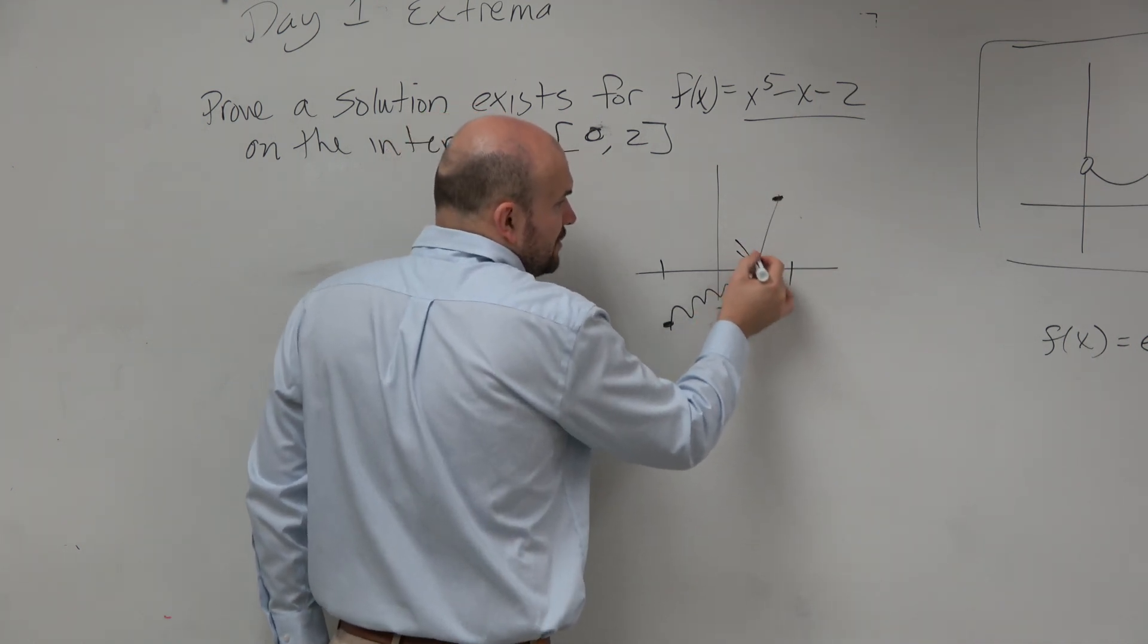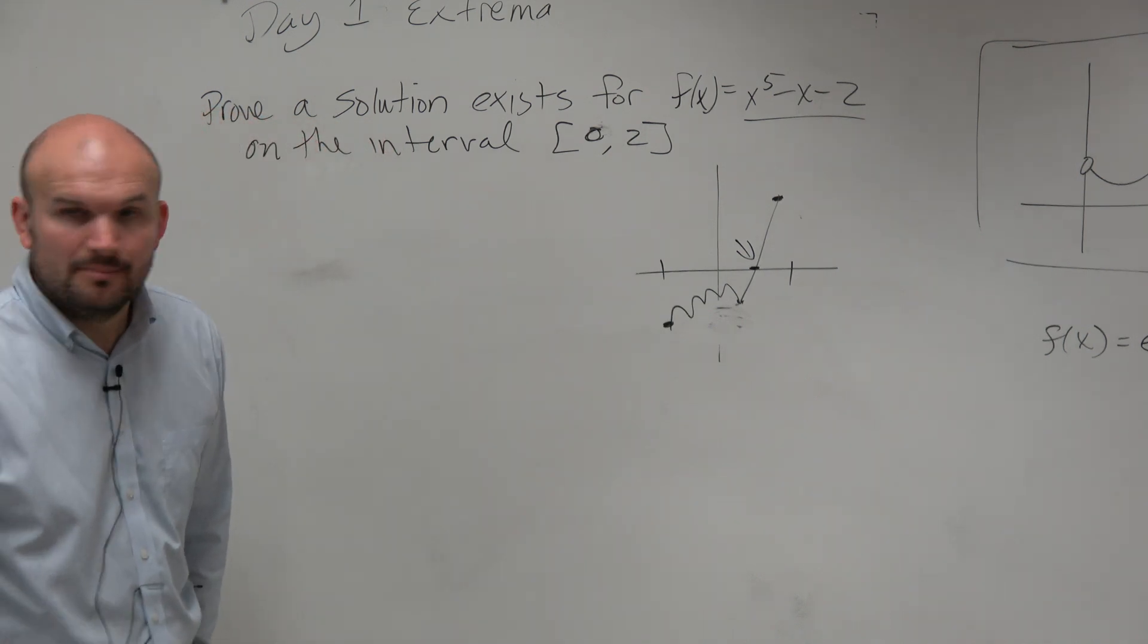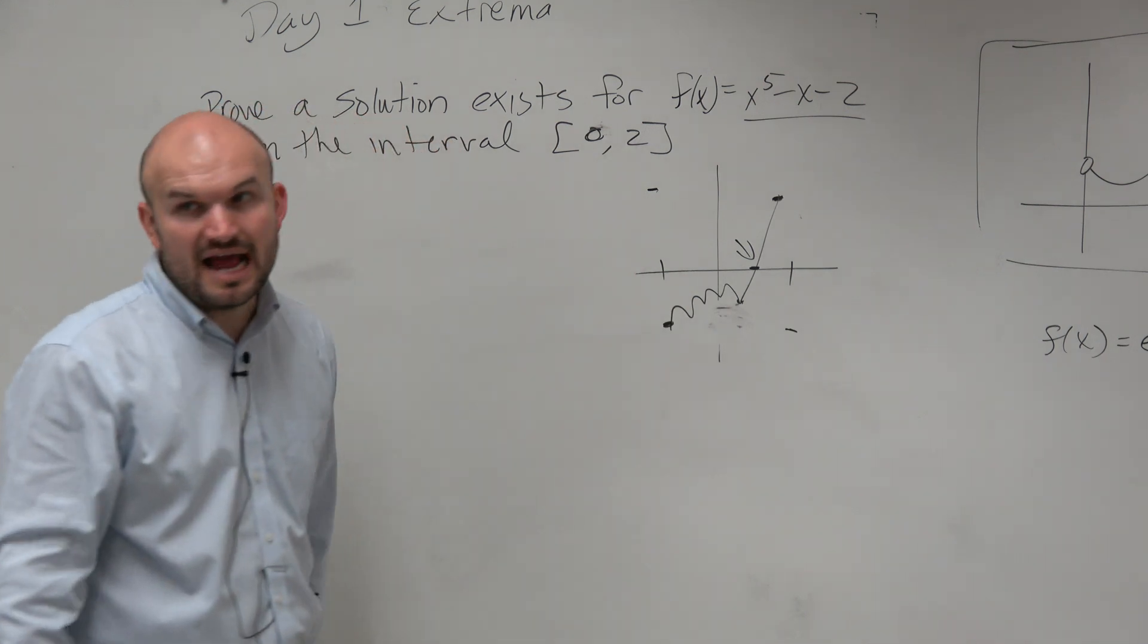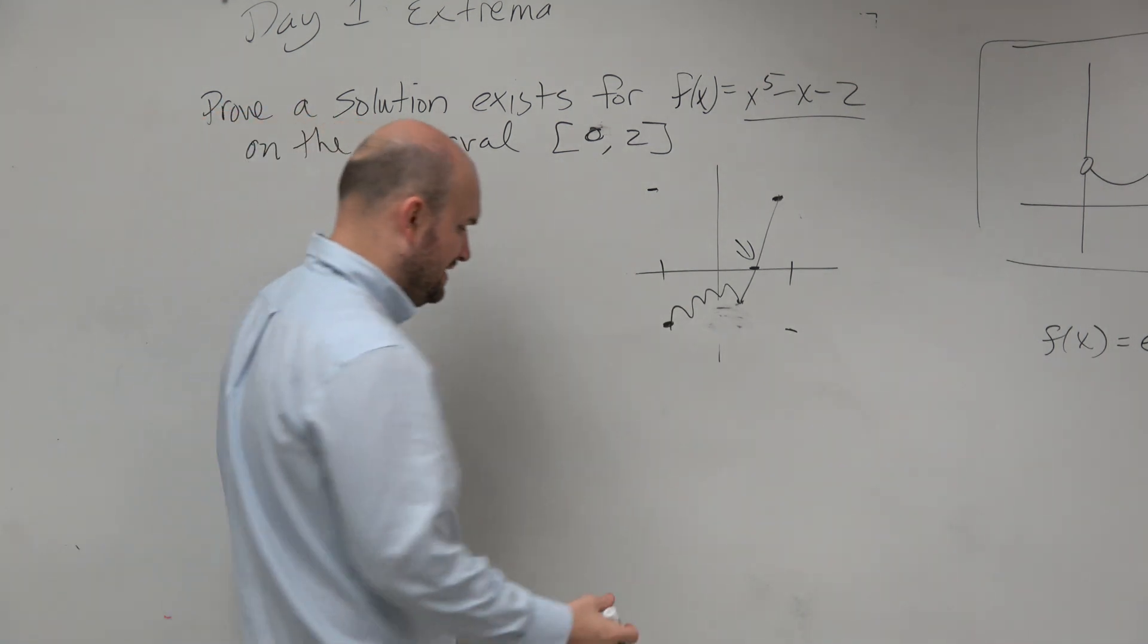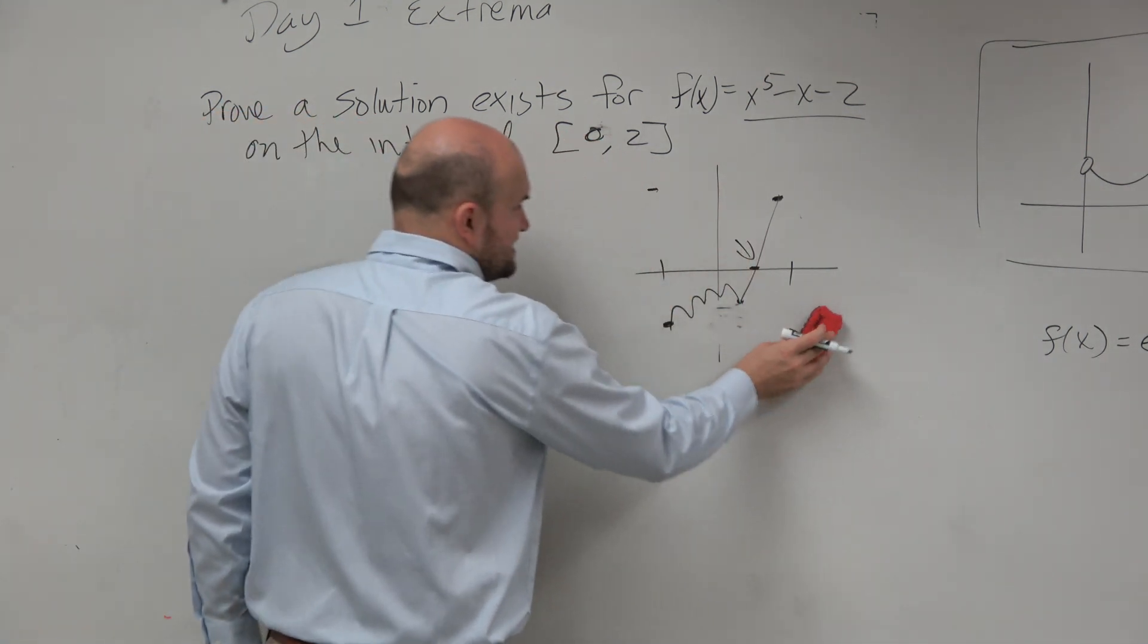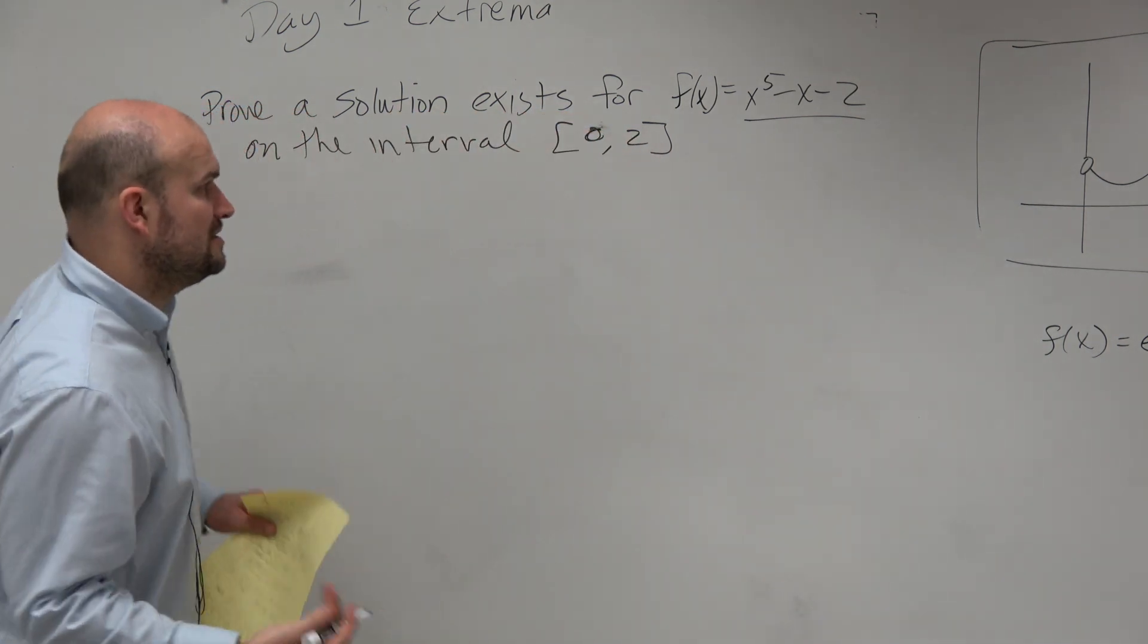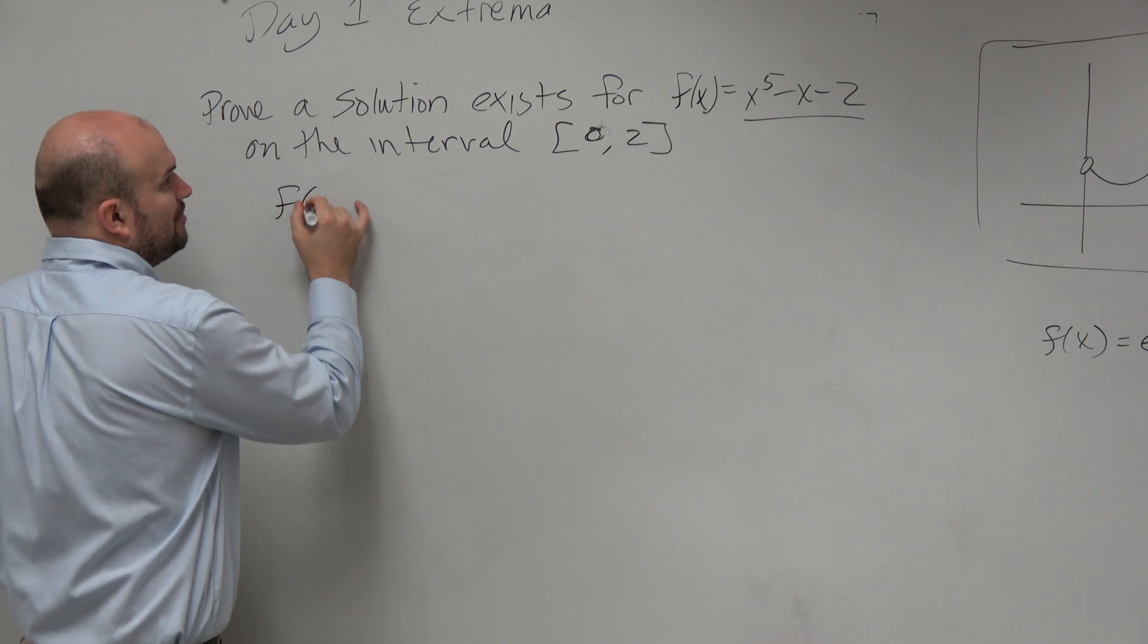We're not looking for this value. We just want to show that it exists. But if you're going from a negative to a positive, or from a positive to a negative, you're going to have to cross that x-axis. So why don't we just go ahead and check our endpoints and see what's happening.